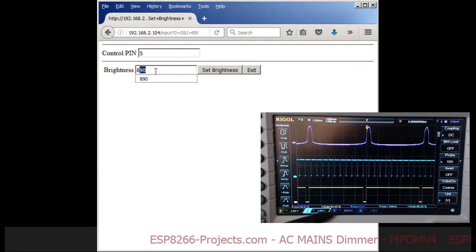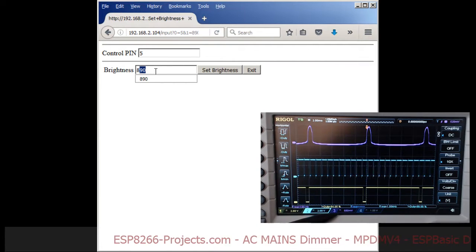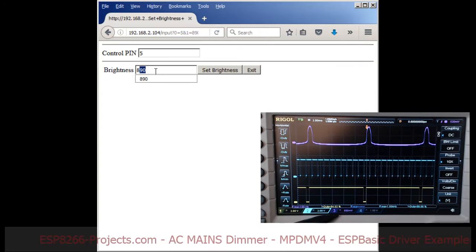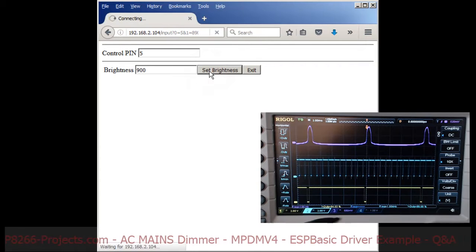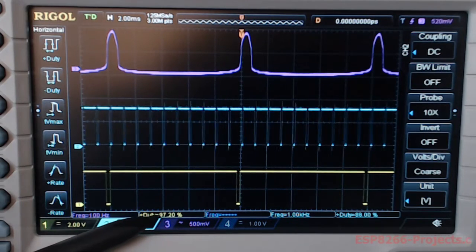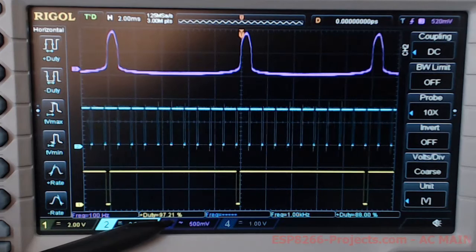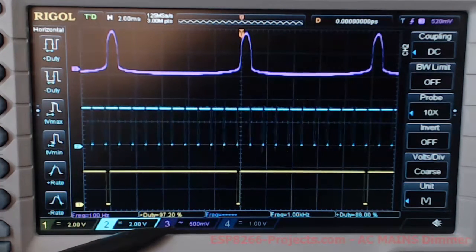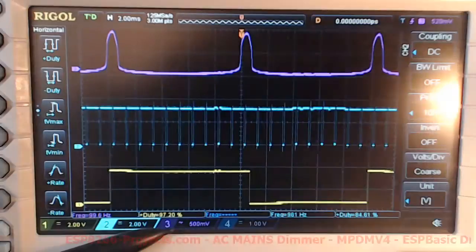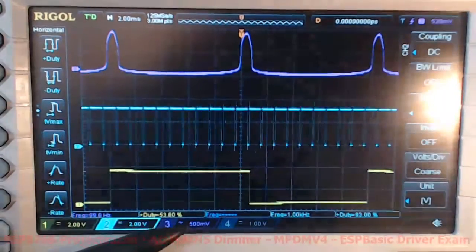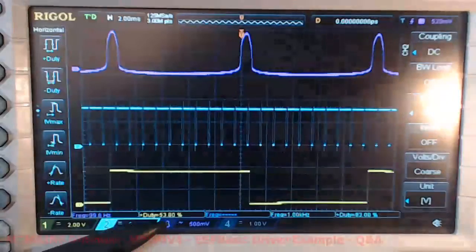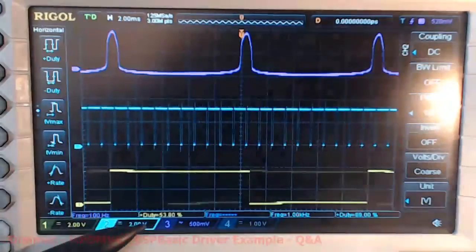This is the safest upper value. We can go probably a little bit further. Let's try 900. 900 will give us a duty cycle about 97%. Probably one further a bit, 910. This is what I want to show you.